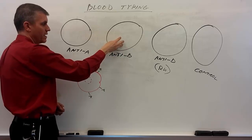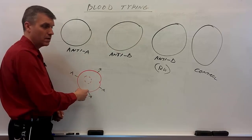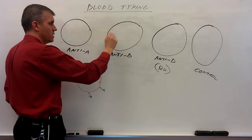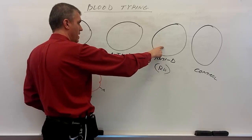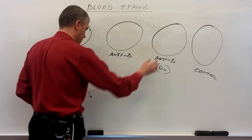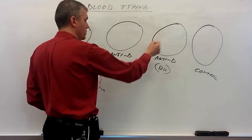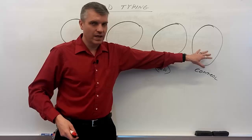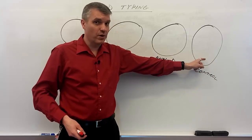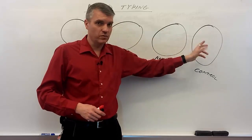When we put this A-negative blood sample into the anti-B circle, we should not see agglutination, because there are no B antigens on this person's red blood cells, so the anti-B antibodies have nothing to react with. The same is true for the anti-D circle: there were antibodies against RH in that circle, but this person doesn't have RH, so those antibodies won't react — no agglutination. And for the control circle, we shouldn't see agglutination for any blood type, since there are no antibodies. If we do see agglutination in the control, that means there's a problem with the test — either a manufacturing defect or cross-contamination when the samples were applied.